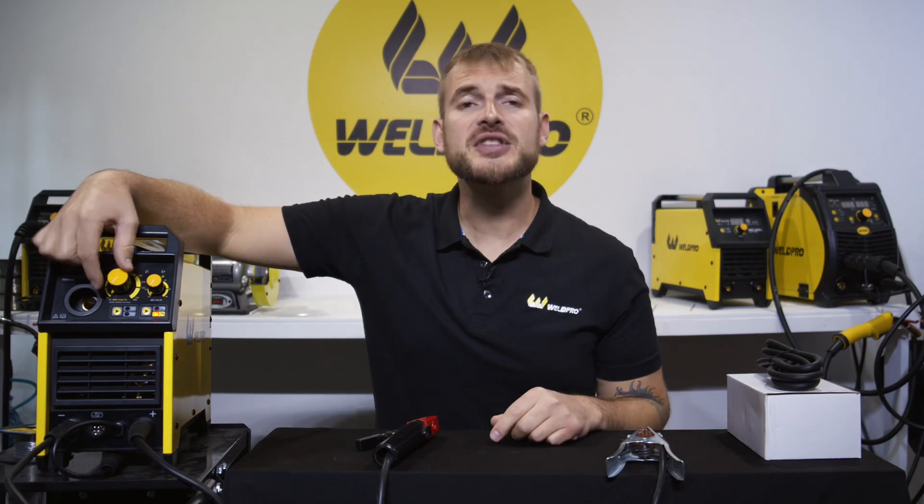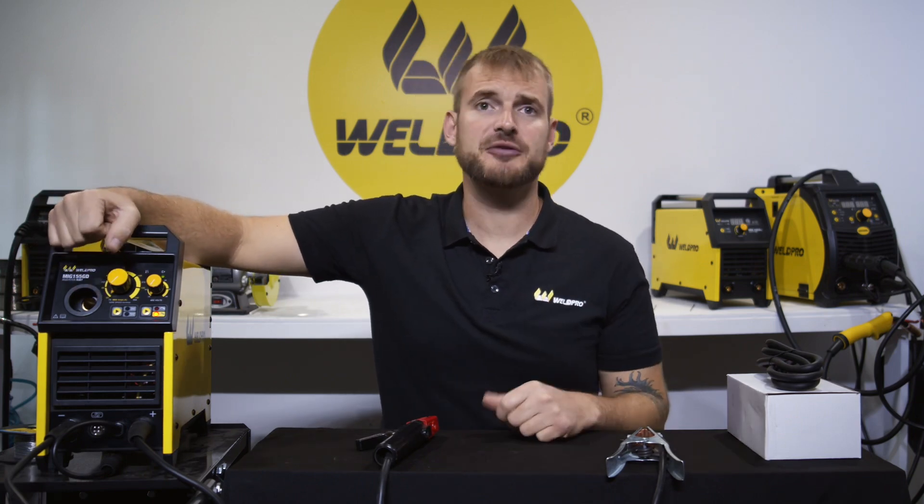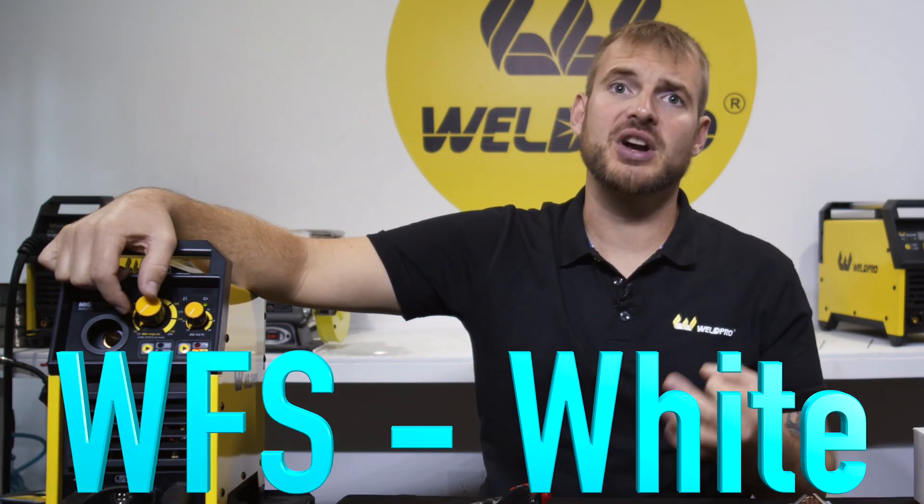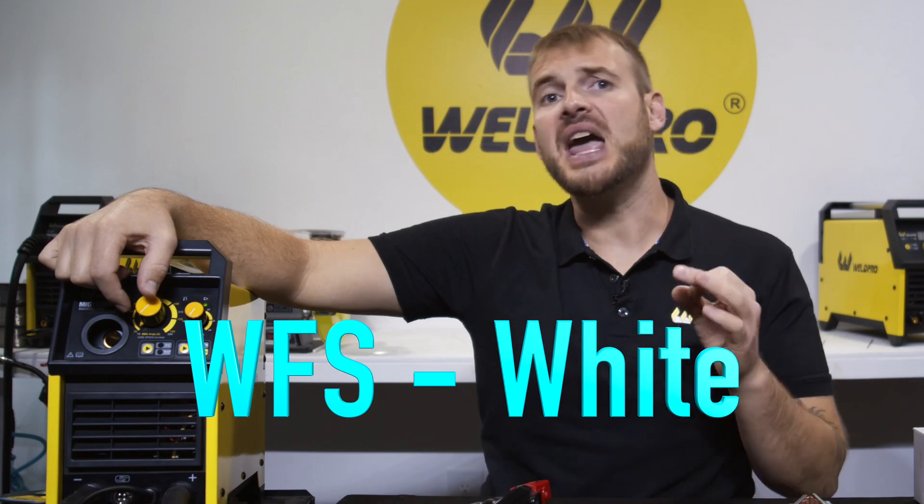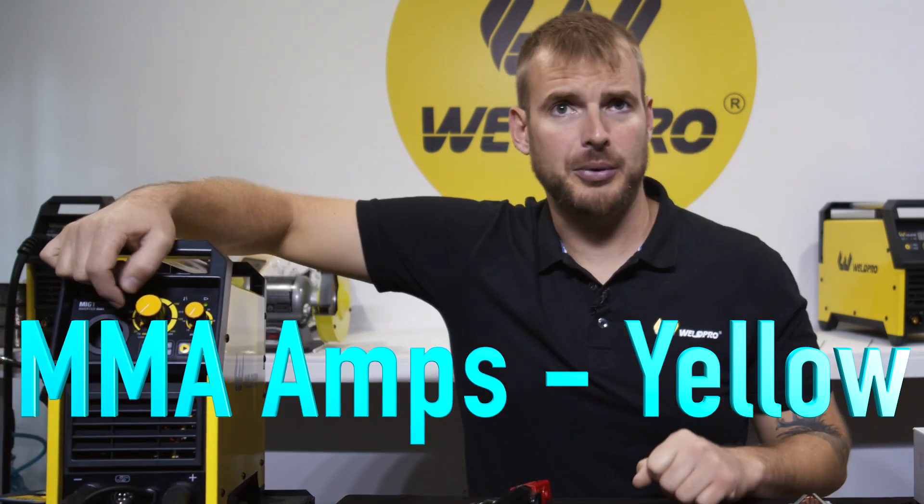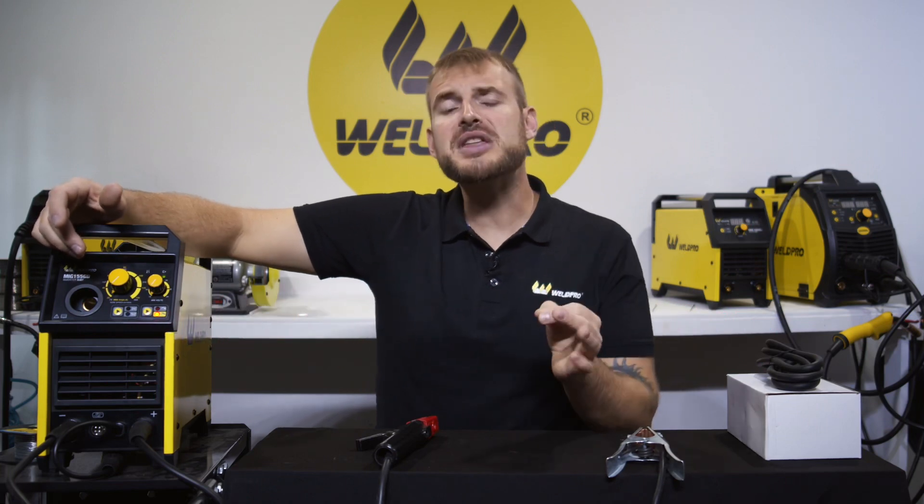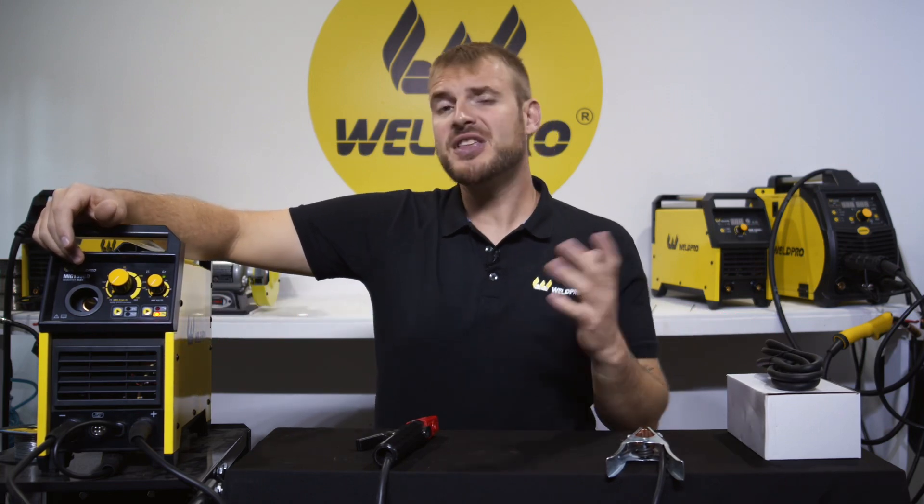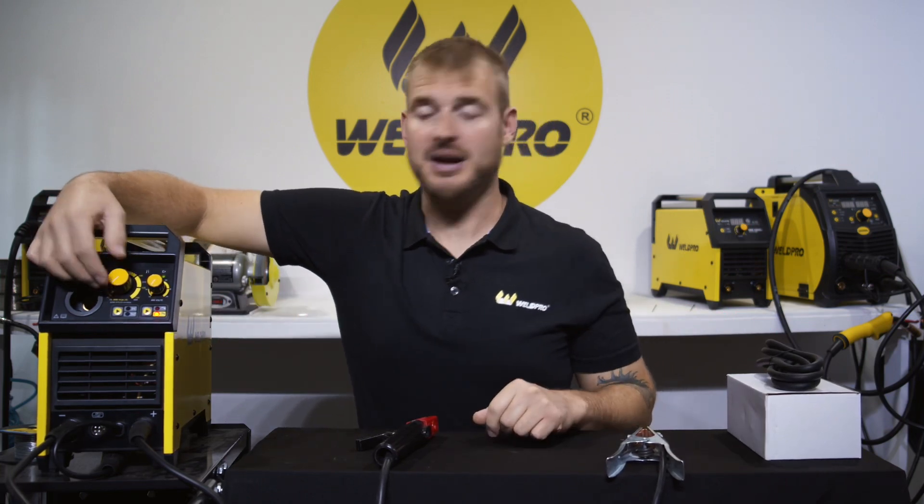The large dial in the center of the display is your amperage adjustment for stick weld. When you're MIG welding, this dial is used for wire speed. The wire speed values are indicated in white. The amperage values during stick welding are indicated with the yellow numbers. Now let's say you're going to run some 3/32 6011. This might run great around 85 amps. The 85 amp position would be just past the 12 o'clock mark on the face of the machine.